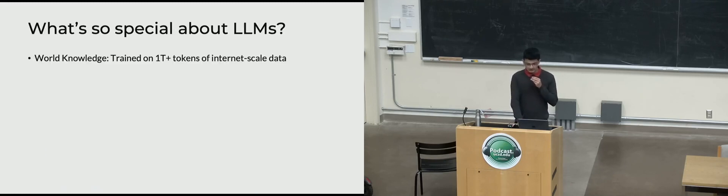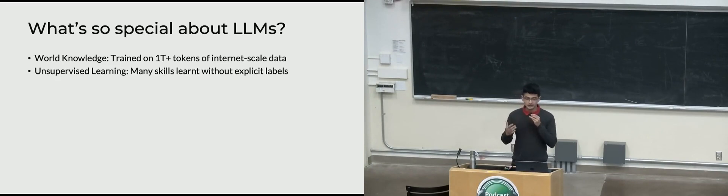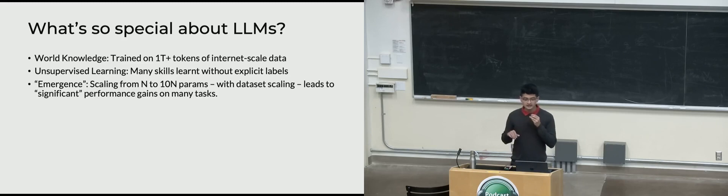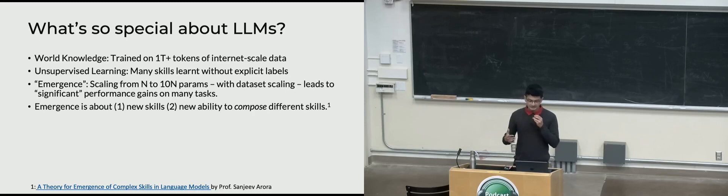What's special about these LLMs? They're trained on trillions of tokens and have been able to distill some amount of world knowledge in terms of reasoning. One more is unsupervised learning — they're convenient to train because many skills are learned without explicit labels. And there's the more abstract phenomenon of emergence: when scaling parameters from N to 10N along with scaling your dataset, there are significant performance gains on some tasks — new skills and the ability to compose different skills.